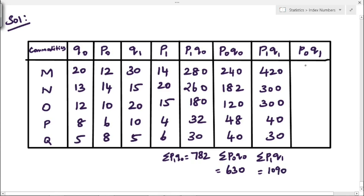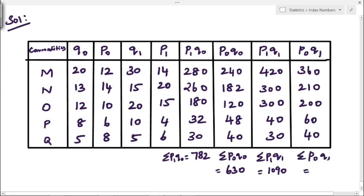And then the last one is P0Q1. So: 12 into 30 is 360, 14 into 15 is 210, 10 into 20 is 200, 6 into 10 is 60, and 8 into 5 is 40. If you add all the values you will get 870.